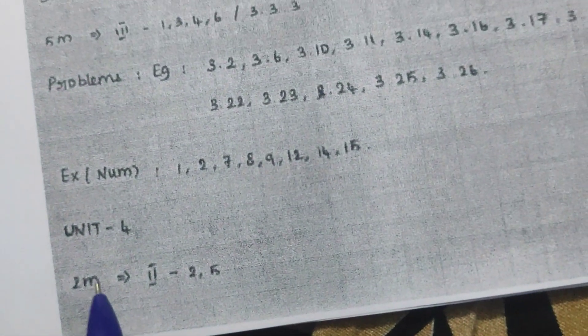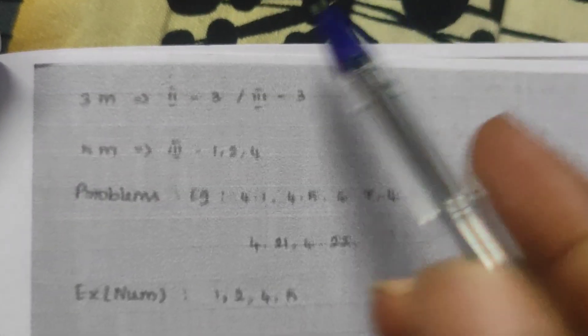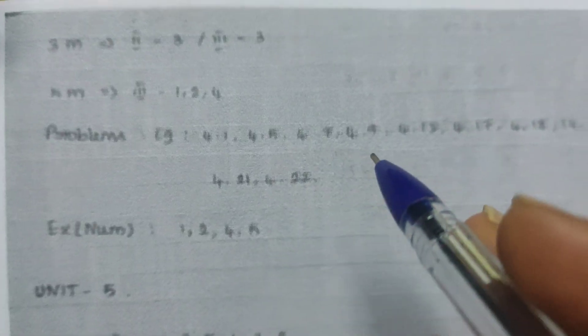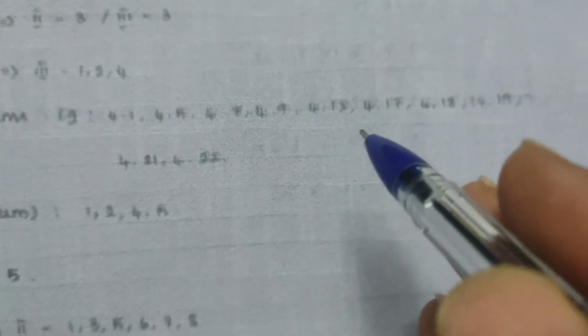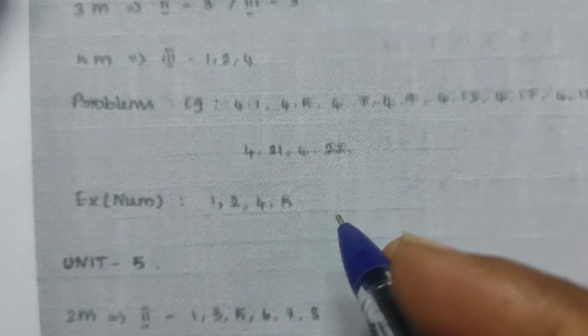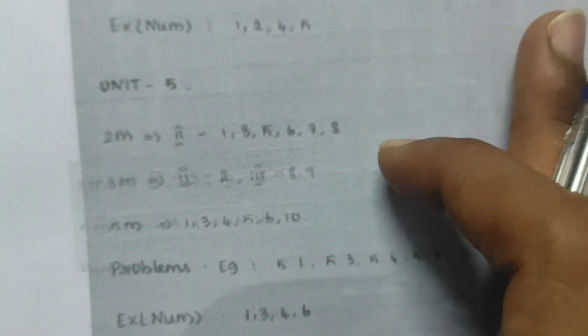Unit 4: 2-mark questions — 2, 5. Check in book pack. 3-mark questions. 3 mark: 3, 3, 4. Problems: examples 4.1, 4.5, 4.7, 4.9. Also 4.15, 4.17, 4.18, 4.19, 4.21, 4.22. Example numbers 1, 2, 4, 5. There is a blur — type it if you print it.